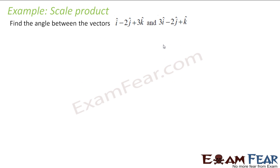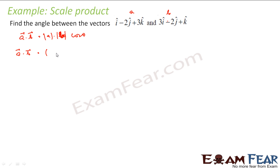Let's take one more example — find the angle between two vectors. To find the angle, I know a dot b equals magnitude of a into magnitude of b into cos theta. Since a and b are given, I can find a dot b, magnitude of a, and magnitude of b, and then easily find cos theta. So let's find a dot b first: a dot b is (i minus 2j plus 3k) dot (3i minus 2j plus k). i dot i is 1, so 1 into 3 is 3.